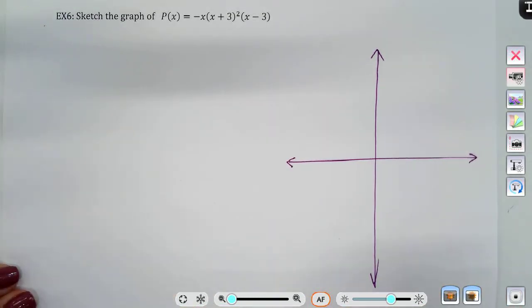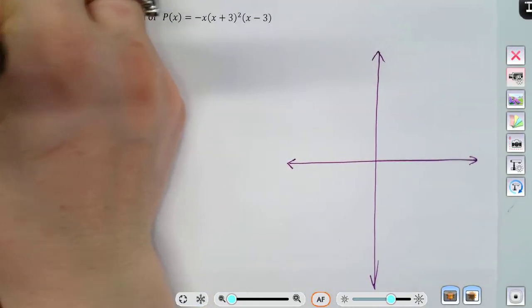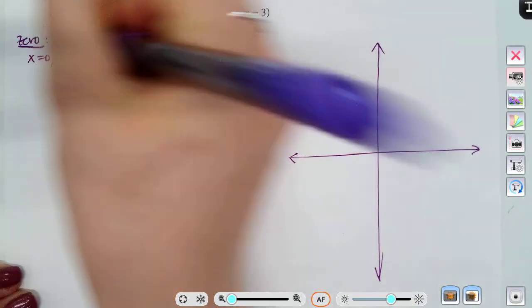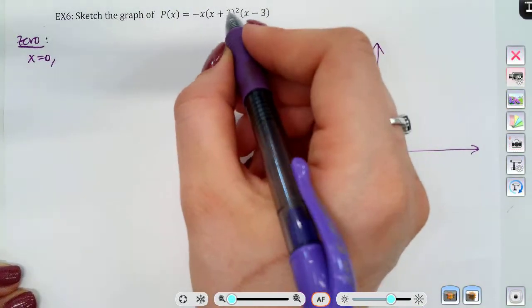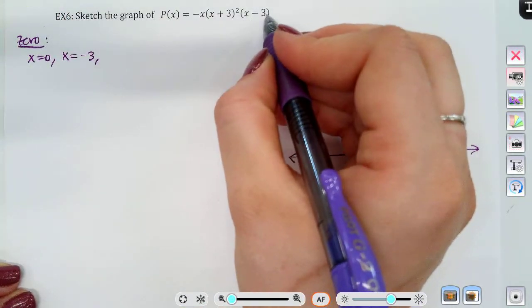Okay, so however many zeros we find, that's actually, they break our graph up into sections. So let's see. I have one zero coming from here, that's going to be x equals zero. My other zero, it's going to be x minus three, and the last one will be from here, which would be x plus two.